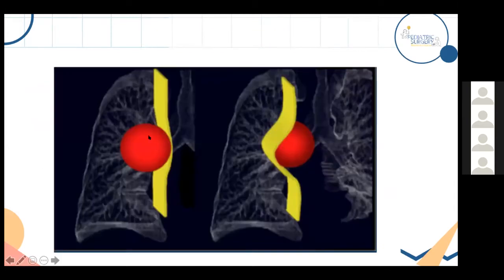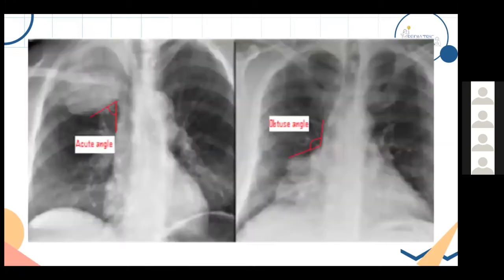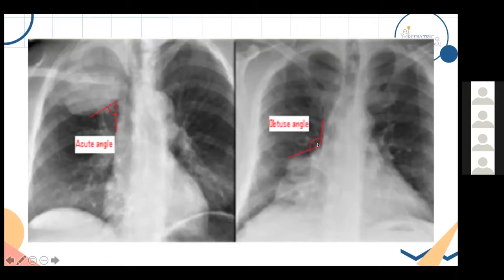On plain X-ray, when a mediastinal mass compresses the lung from outside, the angle at the lung edge is acute — the mass is pushing from outside. When a mass originates from inside the lung, the border shows an obtuse angle. This distinction helps determine the origin of the mass, and collaboration with a radiologist is essential to guide the next appropriate diagnostic modality.